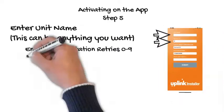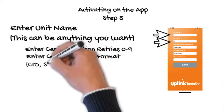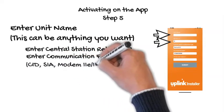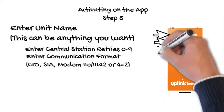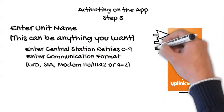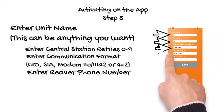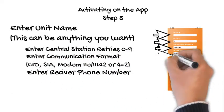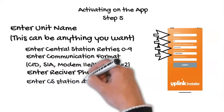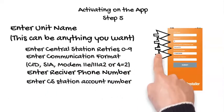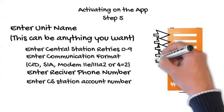Enter the communication format: Contact ID, SIA, Modem EE/FIA, or 2+2 or 4+2. Enter the central station receiver phone number. Be sure to include all 10 digits with no dashes — this is the number for the receiver, the same as the panel would dial it calling over a phone line. Click Submit.